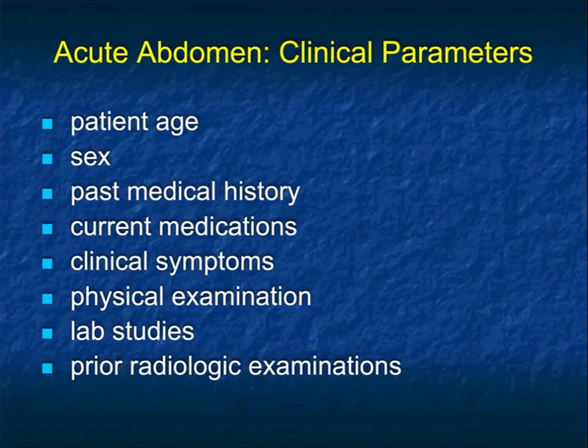When you look at the acute abdomen, we obviously think about many things. Depending on the patient's age or sex, our differential diagnosis will indeed vary. Past medical history — whether you had prior surgery, whether you have a known neoplasm, whether you have sickle cell disease, whether you have diabetes — all of those things are very important, as well as whether you are on medications, and if so, is it something new or something you've been on for three days or ten years?